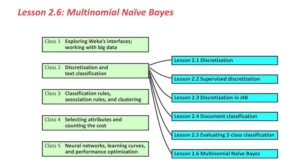Hello again. This is the last lesson in Class 2, Lesson 2.6, and we're going to get back to some actual document classification here. In fact, we're going to introduce a new classifier, Multinomial Naive Bayes, designed for document classification.